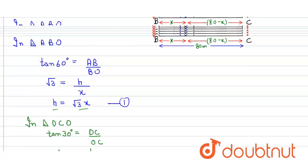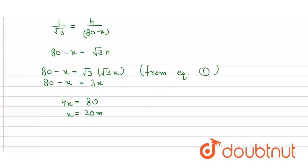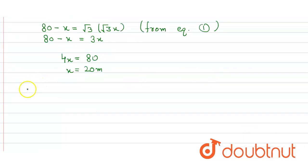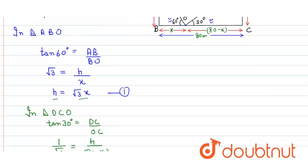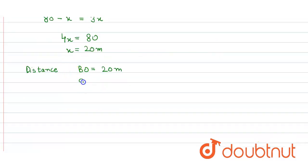So the distance BO equals 20 meters. The other distance OC equals 80 minus 20, which equals 60 meters.